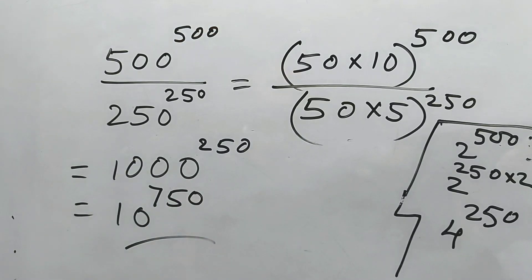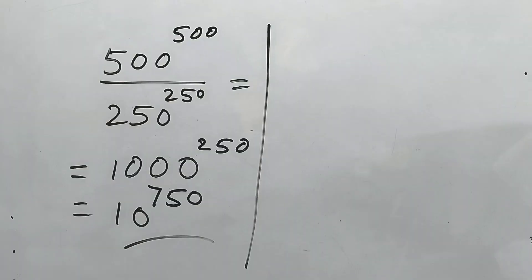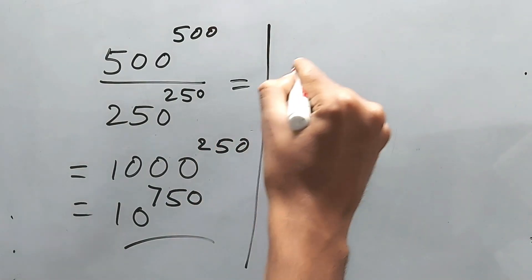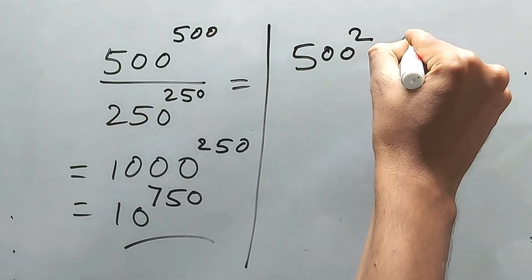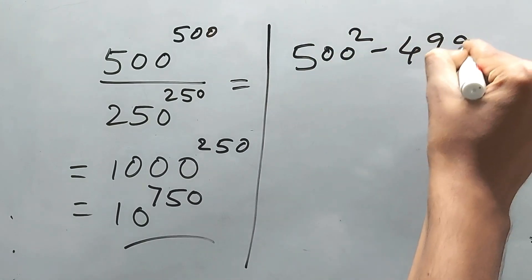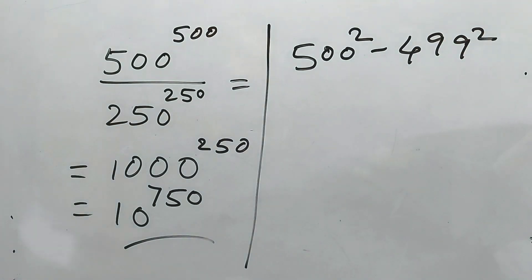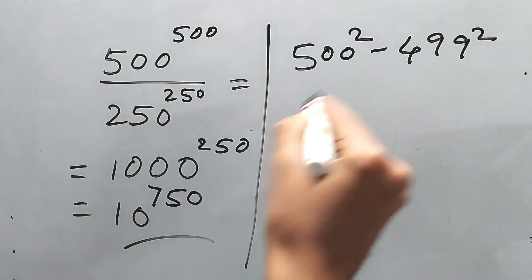This is your simplification. Do you like it? And it's bonus time. Let's find the value of 500 squared minus 499 squared. See, if you've been watching this channel carefully, definitely you know this, right?